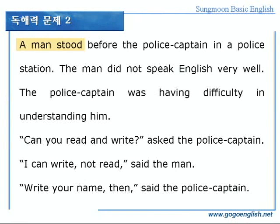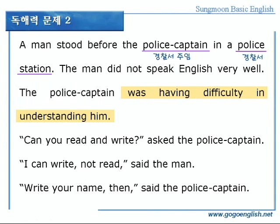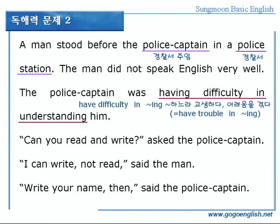자, 그럼 같이 해석해 볼까요? A man stood, 한 남자가 서 있었다. Before the police captain, 경찰서 주임 앞에 in a police station, 경찰서에서. Police captain은 경찰서 주임을 말합니다. Police station은 경찰서죠. The man did not speak English very well, 그 남자는 영어를 그리 잘하지는 못했다. The police captain, 그 경찰서 주임은 was having difficulty in understanding him, 그를 이해하느라고, 즉 그의 말을 알아듣느라고 고생하고 있었다. 중요한 표현이 나왔네요. Have difficulty in -ing, 밑줄 치세요. Have difficulty in -ing 하면 뭐뭐 하느라 고생하다, 어려움을 겪다.